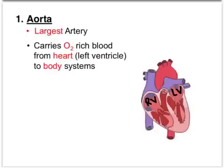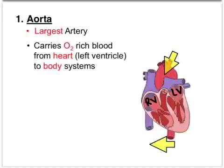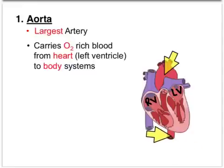The aorta can be found in two places in a diagram — one here and also right here. It's going to deliver that oxygen-rich blood to the body systems, going up to the head region and down to the lower extremities. So it carries oxygen-rich blood from the heart to the body systems.